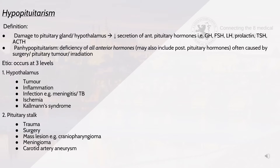Hypopituitarism is damage to the pituitary gland or hypothalamus, and this leads to a decrease in secretion of the anterior pituitary hormones. Panhypopituitarism is deficiency of all the anterior hormones, and may also include the posterior pituitary hormones, often caused by surgery, a pituitary tumour or irradiation.